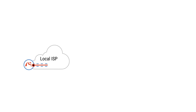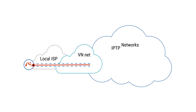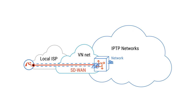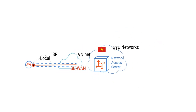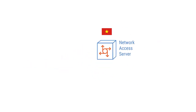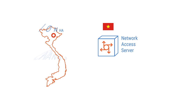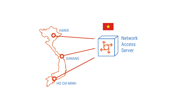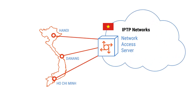For instance, users in Vietnam establish SD-WAN type connections via their local internet provider's public IP address to the public IP address of the Lag Blaster server in Vietnam. Lag Blaster network access servers are available in three regions: North (Hanoi), Central (Da Nang), and South (Ho Chi Minh City), to get closer to users in each region. This short-distance connectivity between Lag Blaster users and the network access server within Vietnam assures the best performance in that segment.